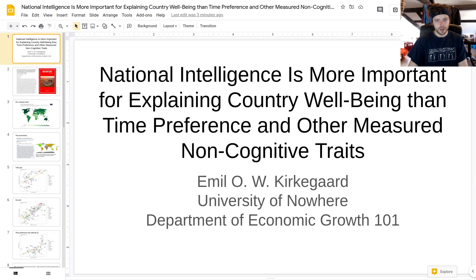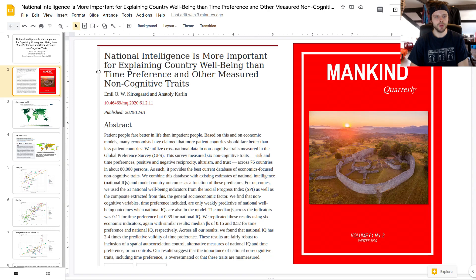Dear fellow white people, today we're going to be talking about national intelligence and why it's more important than patience or time preference or these kinds of delay gratification things that economists and psychologists like to talk about. It's specifically based on this paper that we published in the Mankind Quarterly, of course, the best place to publish dissident science.